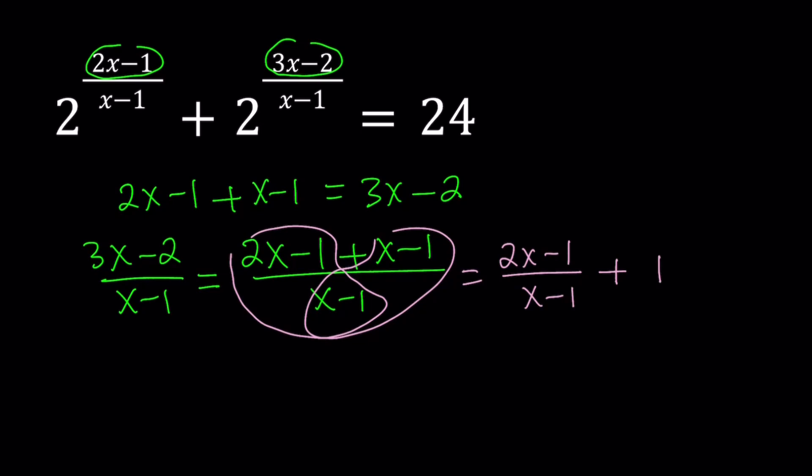So I was able to express 3x minus 2 over x minus 1 in terms of 2x minus 1 over x minus 1. The difference is 1. So we can go ahead and substitute this in our equation.